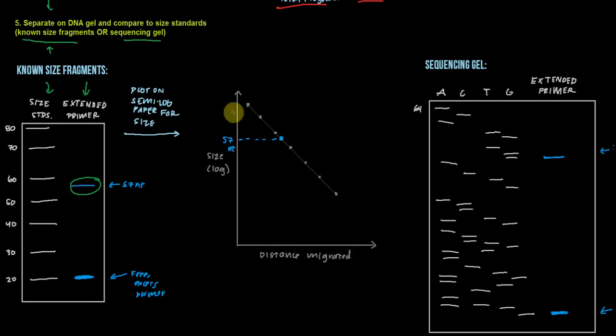We don't know the two-nucleotide precision from this, so what we do is we plot on semi-log paper, where the distance migrated here is on the x-axis. And we plot each of these size standards here, and then we can move over here to the right, and we already know where the size is for all these standards, so we can plot our piece here on this graph, and then it'll tell us the approximate size, which is in this case 57 nucleotides.